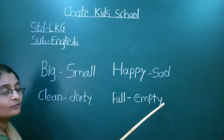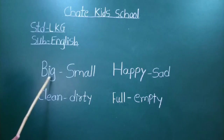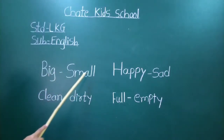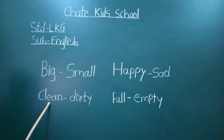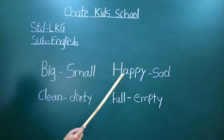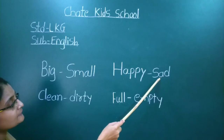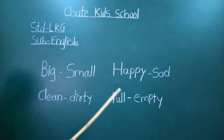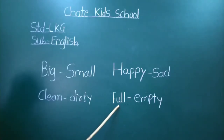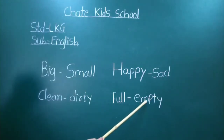E-M-P-T-Y, empty. B-I-G means motha (big). S-M-A-double-L means lahan (small). C-L-E-A-N means swach or chhan (clean). D-I-R-T-Y means ghan (dirty). H-A-P-P-Y means anandi (happy). S-A-D means udas (sad). F-U-L-L means barlela or poorna (full). E-M-P-T-Y means rikama — nothing inside (empty).